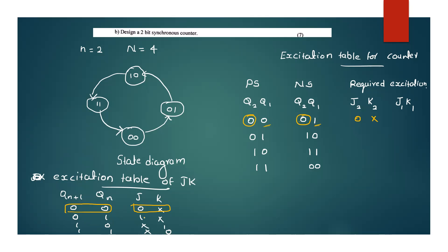When Q2 goes from 1 to 1, then J2=X, K2=0. When Q2 changes from 1 to 0, then J2=X, K2=1. Similarly for Q1: 0 to 1 is J1=1, K1=X; 1 to 0 is J1=X, K1=1. This completes the excitation table entries.